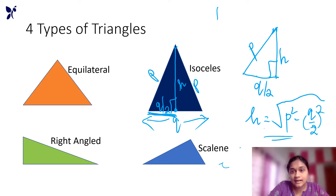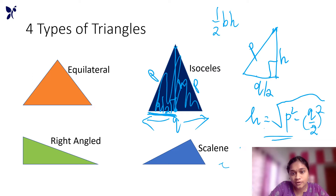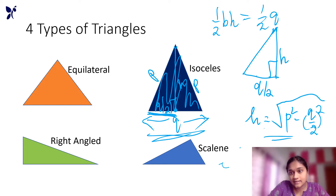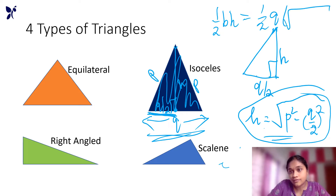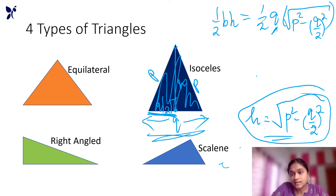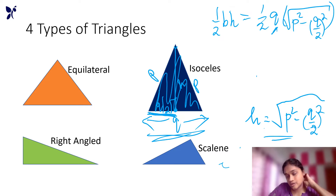So we use half into base into height in the formula. For the full isosceles triangle area, we apply the base as the full length q, and the height h is equal to the square root of p squared minus (q/2) squared. So this is the area of the isosceles triangle.